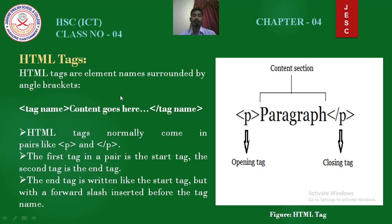Now HTML tags. HTML tags are element names surrounded by angle brackets. If you want to write a tag, you have to write the tag name inside the angle brackets. This is the opening tag and this is the closing tag, and this portion is the tag element. HTML tags normally come in pairs like opening tag and closing tag. Here is an example of a paragraph tag — this one is the opening tag and this one is the closing tag.